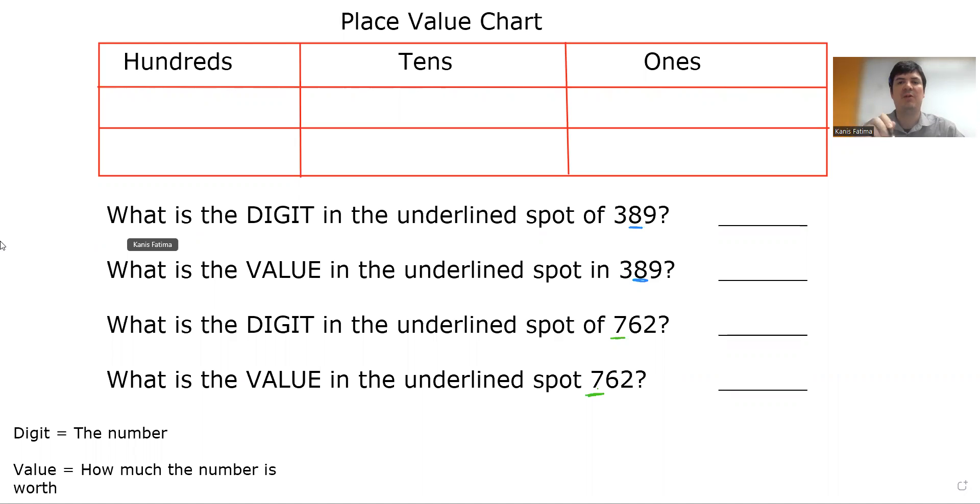So let's look at our first number, 389. If I write that number in my place value chart, I write 3 in the 100 spot, 8 in the 10 spot, and 9 in the 1 spot.